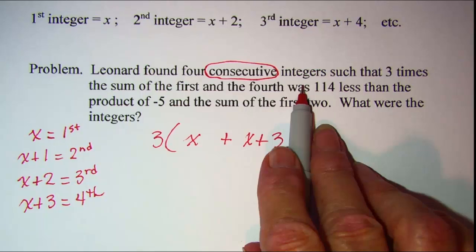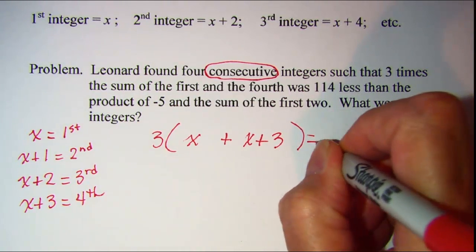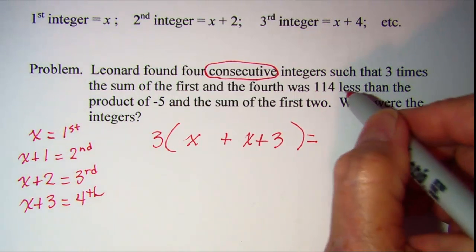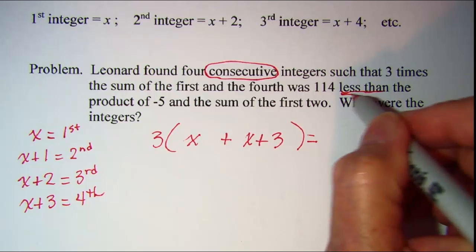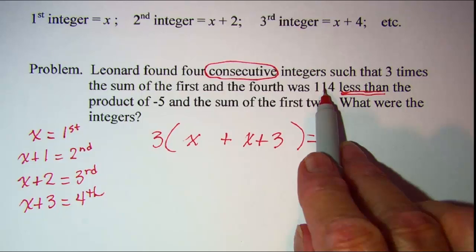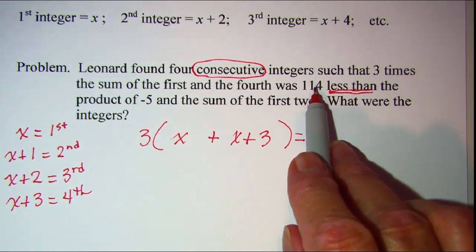Was, so there's my verb, that's where the equals is going to go, and then this less than you've got to be very careful when you see less than that means you need to take the number here and scoot it to the right and put a negative sign in front of it.